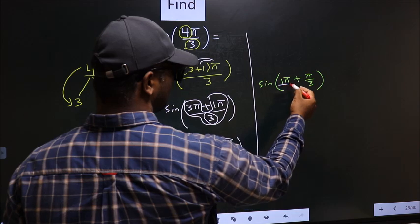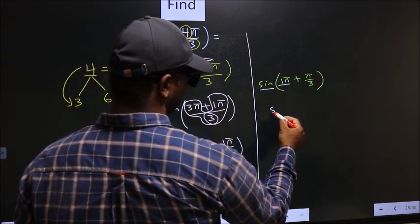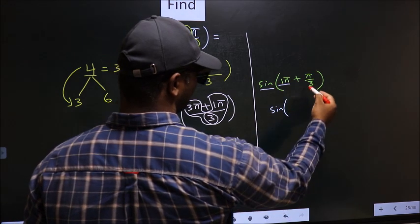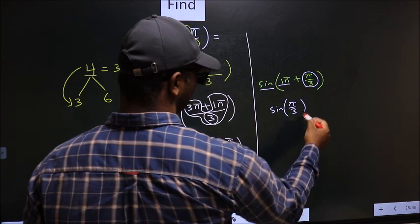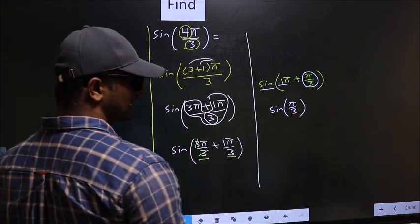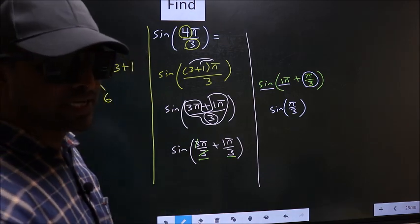Now here we have multiple of π. So multiple of π means sine will remain sine of this angle we get, π by 3.